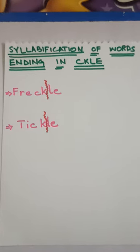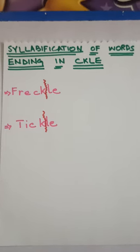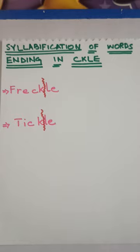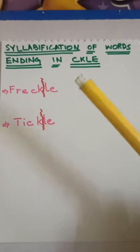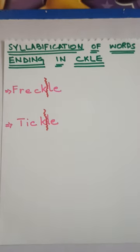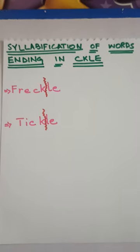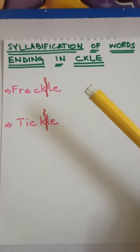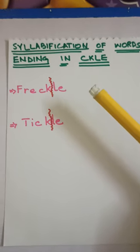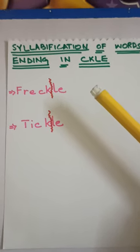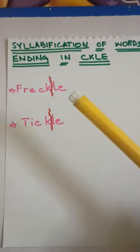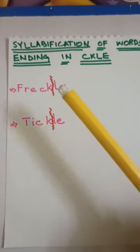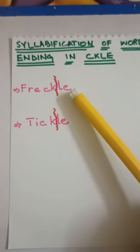In this video, we will learn syllabification of words ending in C-K-L-E. If a word ends with C-K-L-E, you have to divide before L-E, as in freckle.